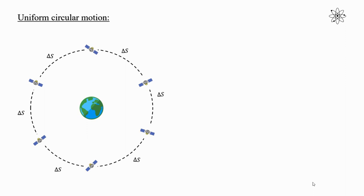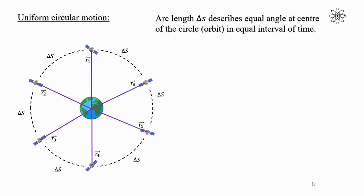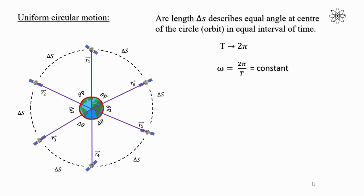Now let's specify the position of a satellite during its motion. For that, we need to consider the radius vector. These are the different radius vectors indicating the position of the satellite during its motion. In a uniform circular motion, equal distance is covered in equal intervals of time. Therefore, the arc length delta s describes equal angle at the center of the circle in equal interval of time. Let delta theta be the angle described by the arc length in equal interval of time. In the periodic time t, the angle described is 2π radian, that is 360 degrees. Therefore, we can write the formula for angular speed: ω is equal to 2π divided by t, which is constant.